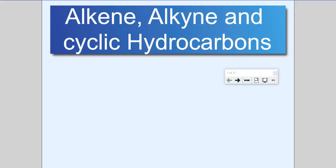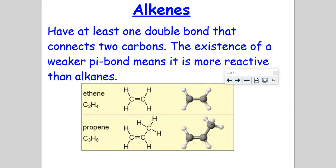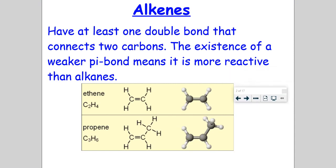An alkene is a hydrocarbon with at least one double bond that connects two carbons. So a couple of examples are here. This refers to weaker pi bonds, and although that does certainly play a huge role in how alkenes react, we will get more into the pi bond in our next unit, so don't worry too much about that.